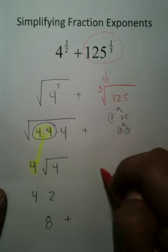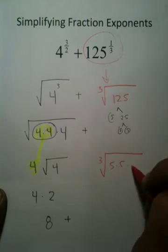Again, we now have this radical, index of 3, 5 times 5 times 5.